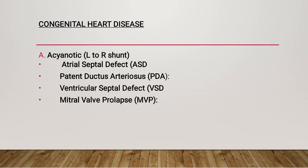In ventricular septal defect (VSD), if the defect is less than 1.25 centimeters square, pulmonary hypertension and heart failure do not develop and pregnancy is well tolerated with a small to moderate left-to-right shunt or with moderate pulmonary hypertension. The major risk is shunt reversal leading to circulatory collapse and cyanosis. Hypotension is to be avoided and fetal loss may be up to 20%.